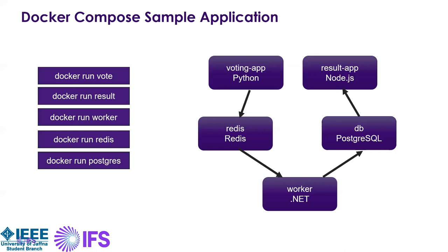Now let's move to Docker Compose. Why do we need Docker Compose? If you need to set up a complex application running multiple services, Docker Compose solves that. Consider this voting application example: there's a front-end voting app and a result app accessible by users. When a user votes, it saves to Redis (in-memory storage). A back-end worker processes the votes and puts them into PostgreSQL (a persistent database). The result is then shown in the result web app. So the voting app is one microservice, the result app is another. The voting app runs in Python, the result web app runs on Node.js, and the worker uses the .NET framework. If you need to run this application on your machine, you'd need to install Python, Node.js, .NET, Redis, and PostgreSQL — that's the actual usage case for Docker and Docker Compose.